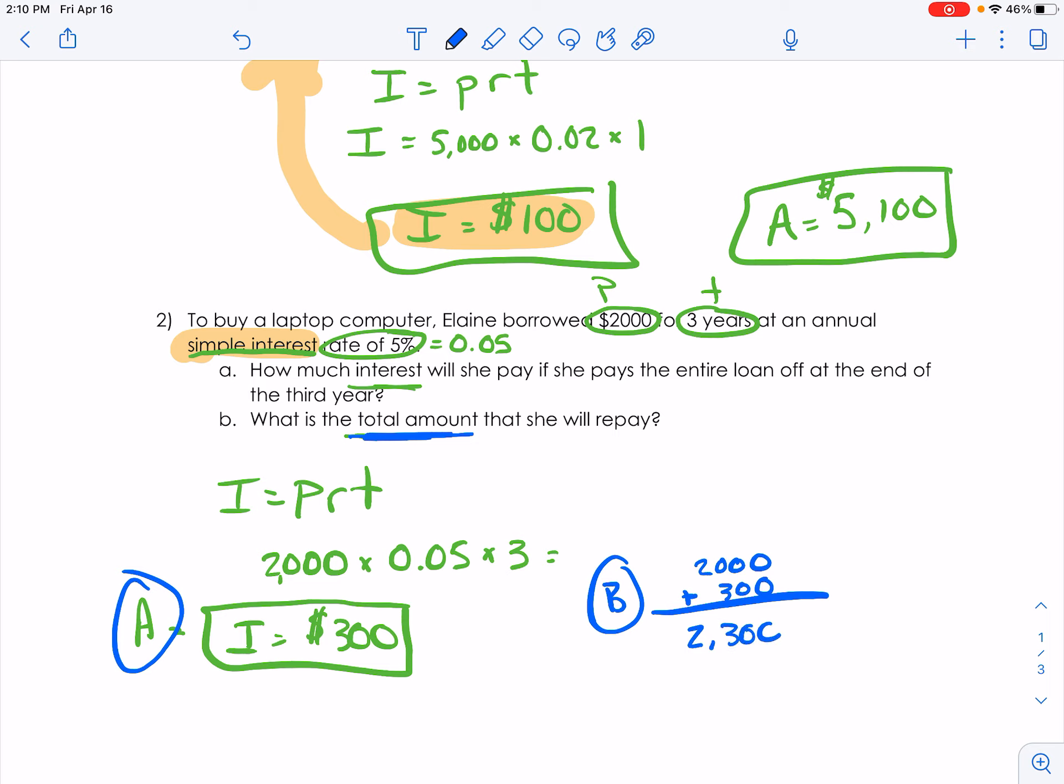So that computer is going to end up costing us $2,300 because we had to borrow the money. So we're having to pay that extra because we borrowed it from somebody else. That's how they made their money. So those two examples are using the simple interest formula.